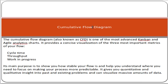The Cumulative Flow Diagram, also known as CFD, is one of the most advanced Kanban and agile analytical charts. It provides a concise visualization of the three most important metrics of your flow: cycle time, throughput, and work in progress. The main purpose is to show you how stable your flow is and help you understand where you need to focus on making your process more predictable.